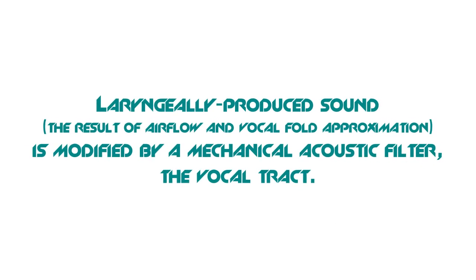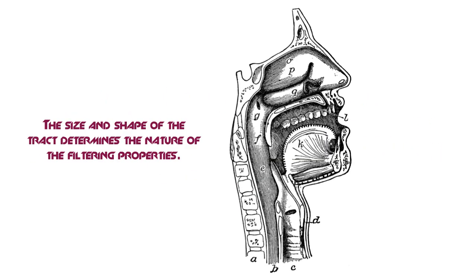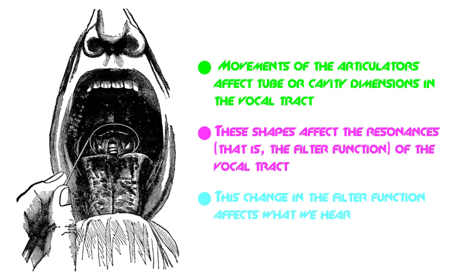From the book: laryngeally produced sound — the result of airflow and vocal fold approximation — is modified by a mechanical acoustic filter, the vocal tract. The size and shape of the tract determines the nature of the filtered properties. Movements of the articulators, your tongue and your lips, affect the tube cavity and the dimensions of the vocal tract, and these shapes affect the resonance of your sound.